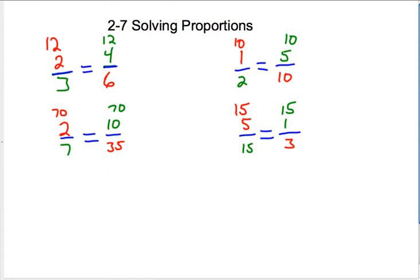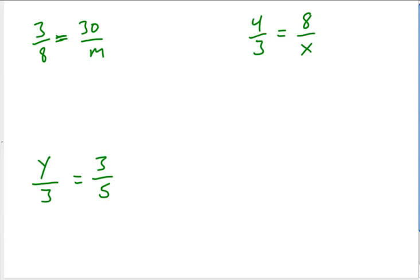Whenever you have two fractions, a over b and c over d equal to each other, a times d will equal b times c. And we can use that to solve proportions that have variables in them.